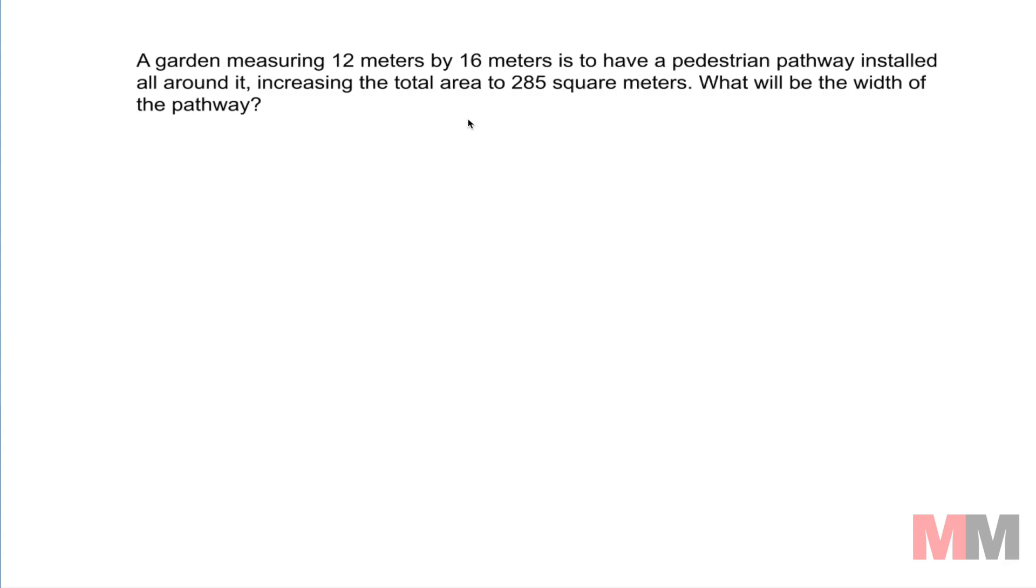Welcome to another Math and Man episode where today you have two quadratic word problems. A garden measuring 12 meters by 16 meters is to have a pedestrian pathway installed all around it. You want to treat these pedestrians right.